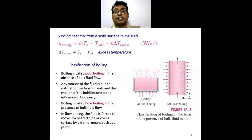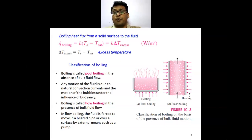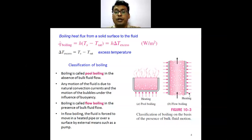In convection, we have natural convection and forced convection — depending on whether the fluid moves naturally or is force-moved. Similarly, in boiling, based on bulk fluid motion, we have pool boiling and flow boiling. Flow boiling is also called forced boiling. Pool boiling is similar to natural convection processes.